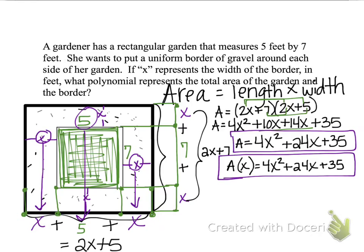And then the 4X squared plus the 24X represents the border that goes around it. Now as you continue through this section in the book, you're going to see some problems similar to this.